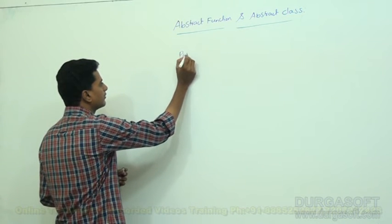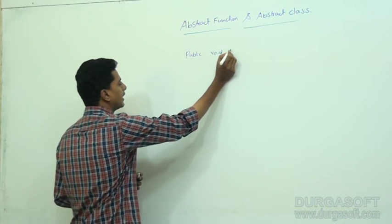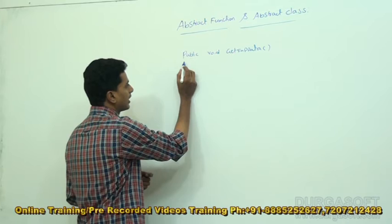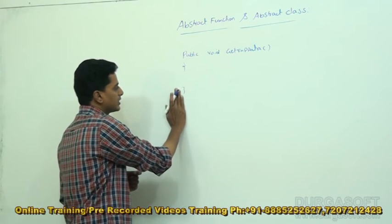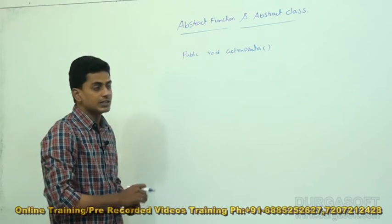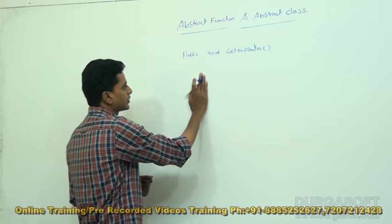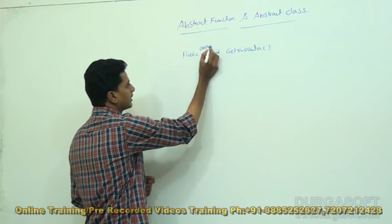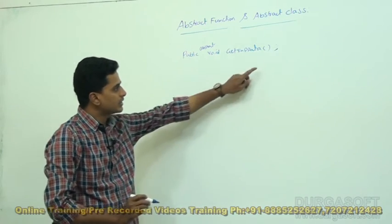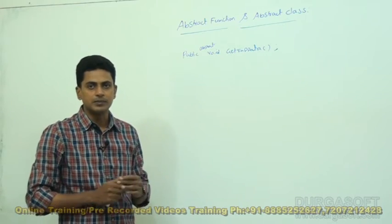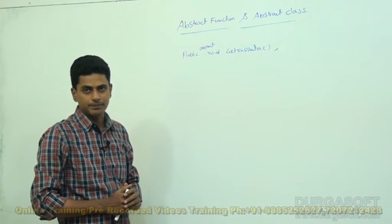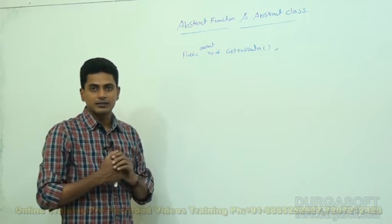For example, here I am taking one function: public void getEmpData. This is not an abstract function because it has some implementation. But to make any function abstract, we use the abstract keyword: public abstract void getEmpData. Abstract function should be terminated — no implementation is there. This type of function is called an abstract function.